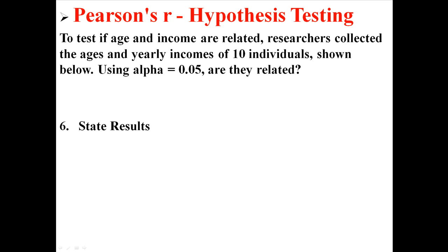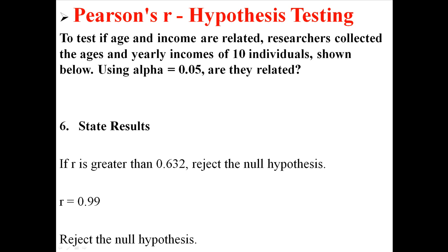So now we can move on to stating our results. Remember our decision rule was that if our R was greater than 0.632, we were going to reject the null.